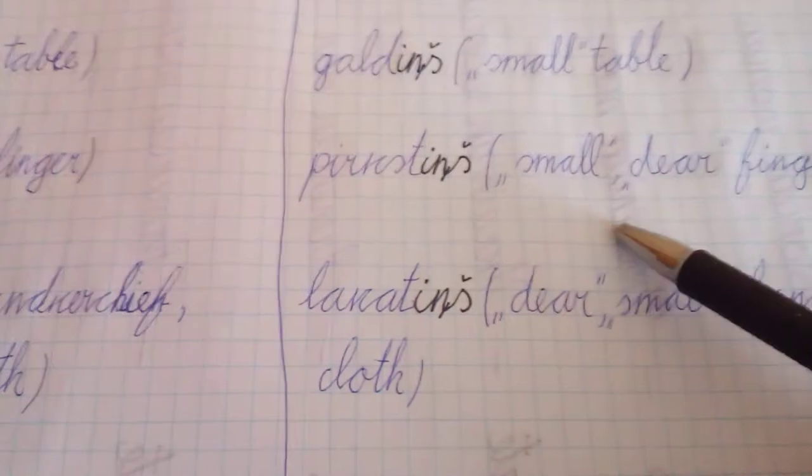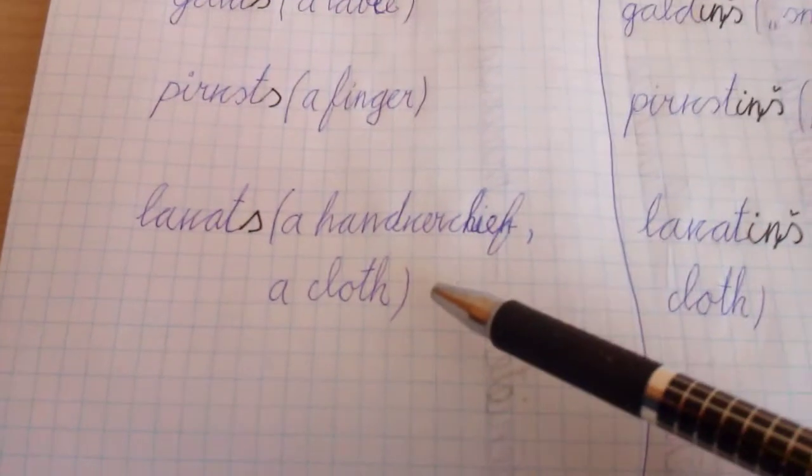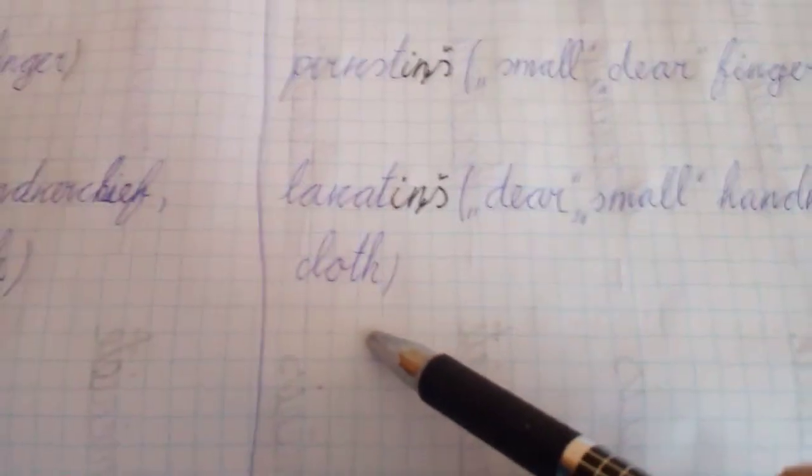Pirksts, a finger. Pirkstinš, a small dear finger. Lakats, a handkerchief or cloth. Lakatinš, a dear small handkerchief or cloth.